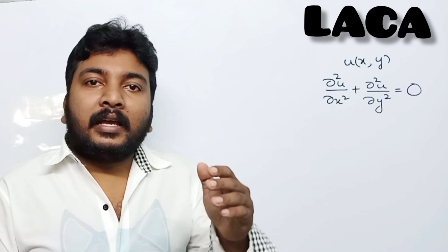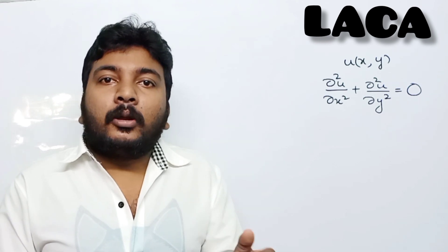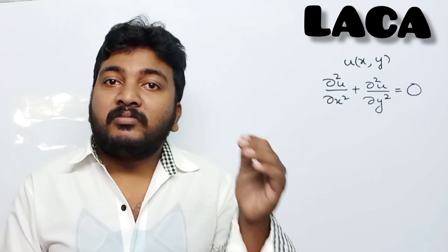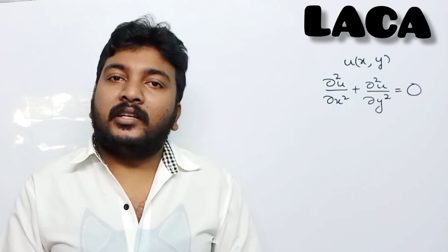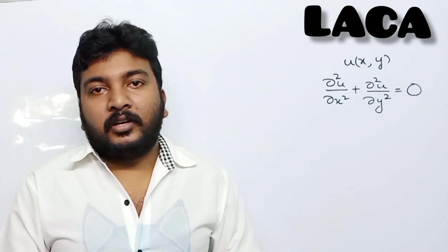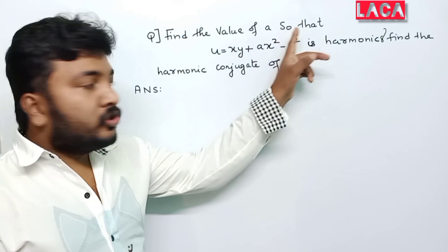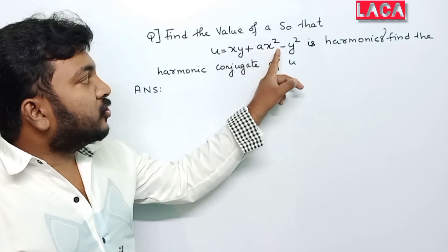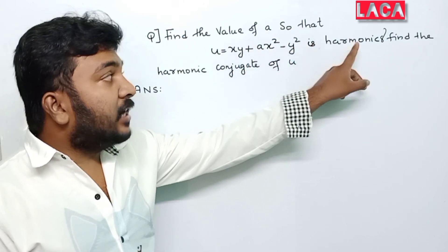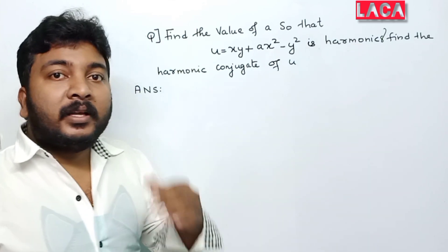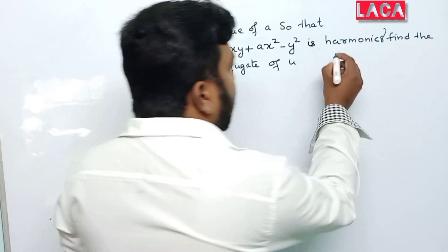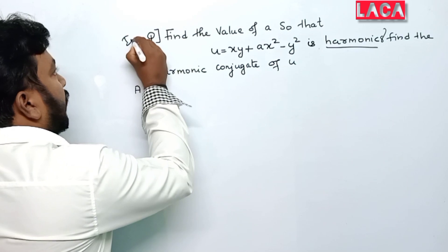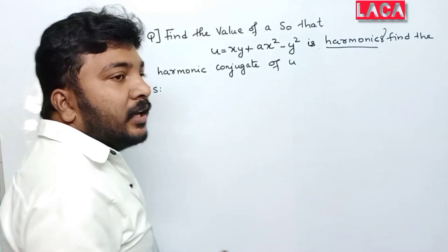U(x,y): ∂²u/∂x² + ∂²u/∂y² = 0. We will try the problem: find the value of a, so that u = xy + ax² − y² is harmonic. What do we mean by harmonic? This is a very important question. I will tell you the type of questions.